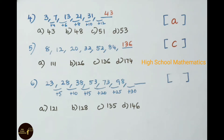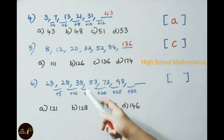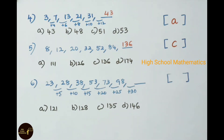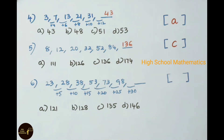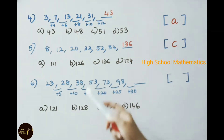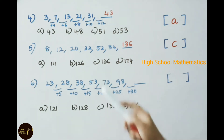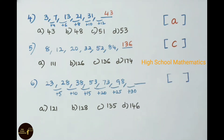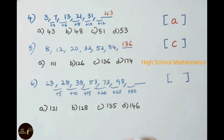Sixth practice problem: 23, 28, 38, 53, 73, 98 — find the next term. Observe: the differences form an addition series — plus 5, plus 10, plus 15, plus 20, plus 25. So 23 plus 5 is 28, 28 plus 10 is 38, 38 plus 15 is 53, 53 plus 20 is 73, 73 plus 25 is 98. Next is 98 plus 30, which is 128. The answer is option B, 128.